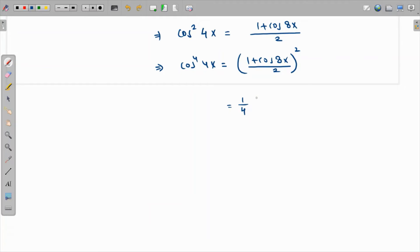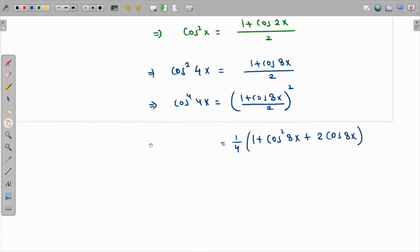Everything is okay except the cos² 8x term. We need to get rid of this as well to express everything in terms of first powers.